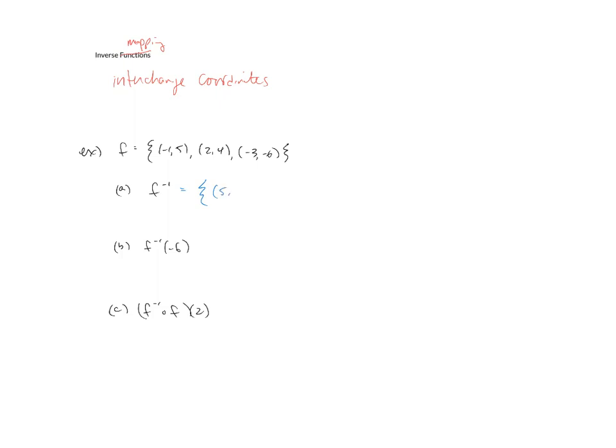Instead of (-1, 5), we have (5, -1). Instead of (2, 4), we have (4, 2). And instead of (-3, -6), we have (-6, -3). So that's the inverse of f.